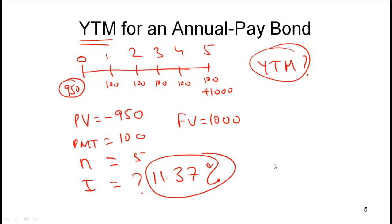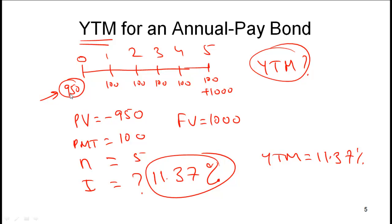The YTM on this bond is 11.37%. In other words, given that you invest 950 and you are getting this return over 5 years, your annualized return assuming you hold till maturity is 11.37%. This makes sense because this is a discount bond — the amount you paid is less than the par value — and hence your yield is more than the coupon rate of 10%.